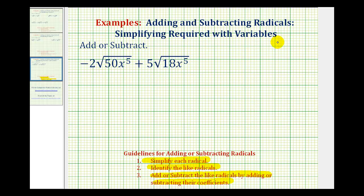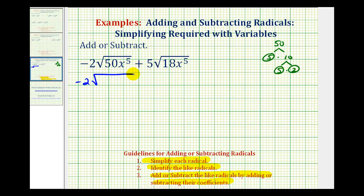So let's find the prime factorization of 50. 50 is equal to 5 times 10; 5 is prime, and 10 is equal to 5 times 2, both of these are prime. So we can write this first term as negative 2 times the square root, and then for 50 we'll have 2 times 5 times 5.